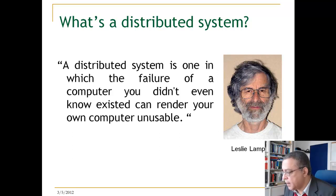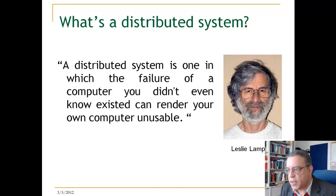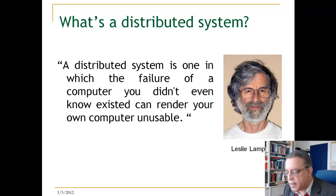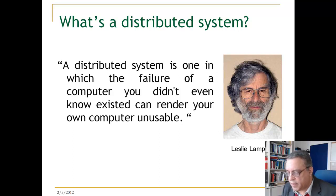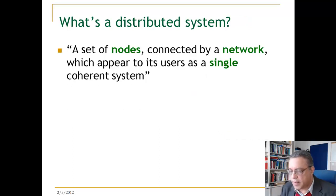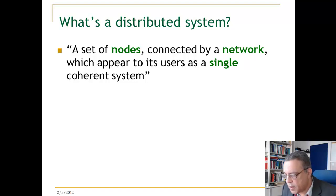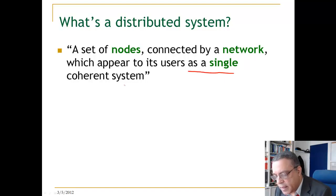What did he mean by this? He really means that a distributed system is actually a system consisting of many machines working together. Your machine is just one part of this. And if your machine is depending on other machines and their functionality, their application, if any of these fails, your machine will not work. Think of a situation where there is another machine in the system which is, say, a file system. Your machine is running an application that depends on that file system. If that file system fails, your machine cannot perform its application. So, a distributed system in this course is actually a set of nodes — that is computers, machines — connected by a network. And they work together to do some service or some application. That's why we say that they appear as a single coherent system.